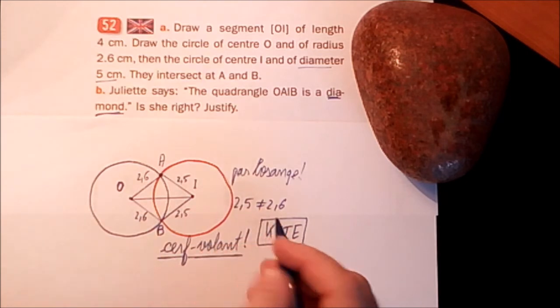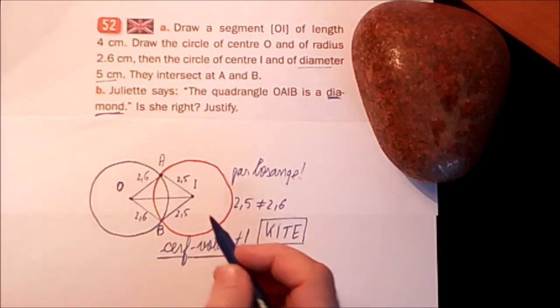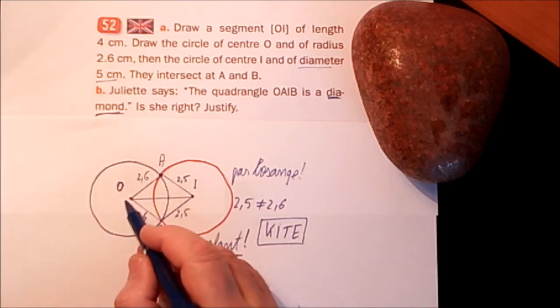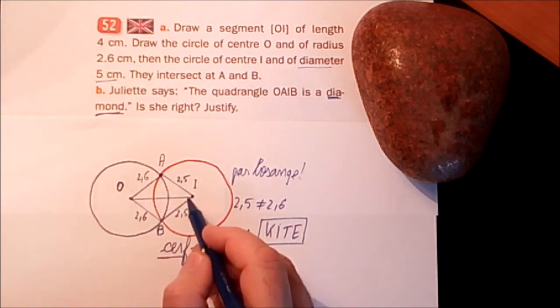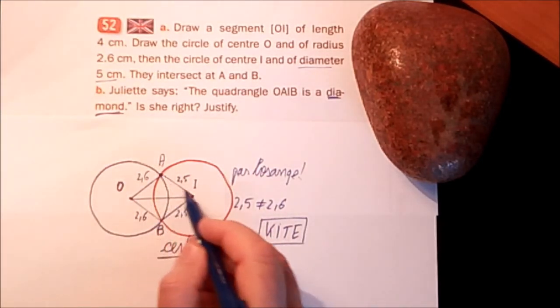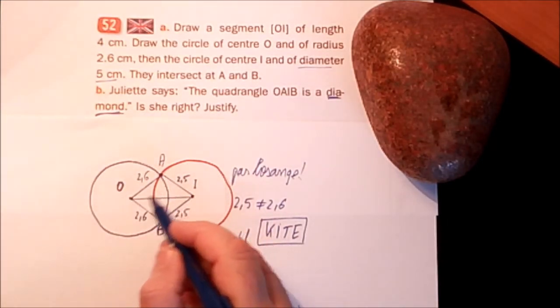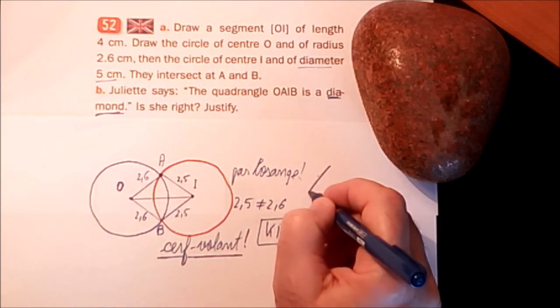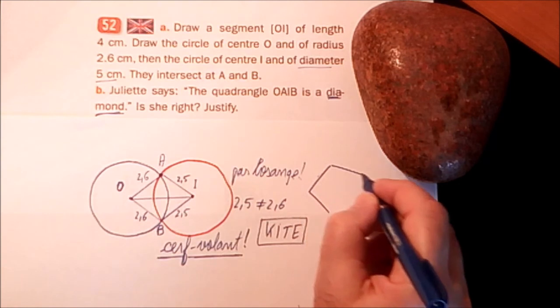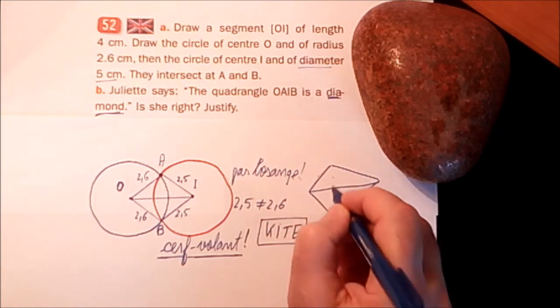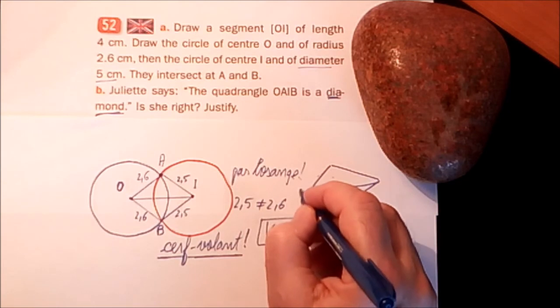Qu'est-ce que c'est un cerf-volant? Ben, c'est un quadrilatère qui est symétrique par rapport à une diagonale. Regardez la diagonale OI. Je fais le symétrique de OAI par rapport à OI, on tombe sur OBI. Voilà. Un autre cerf-volant si vous voulez. Voilà, ce triangle et celui-là sont symétriques par rapport à OI.